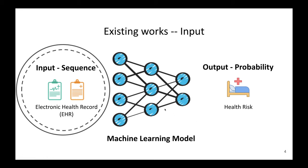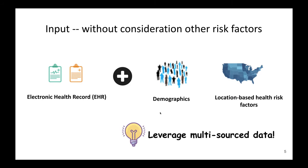From an input perspective, existing machine learning models all ignore the importance of online public health data, especially the demographics and location-based health risk factors. In fact, many of these public health data are strong predictive signals and can definitely help to improve the model accuracy. For example, environmental factors were proved to be an important risk factor for Alzheimer's disease. Hence, how to utilize data from different sources to enhance prediction performance is a new challenge. In this work, we aim to leverage multi-source data.